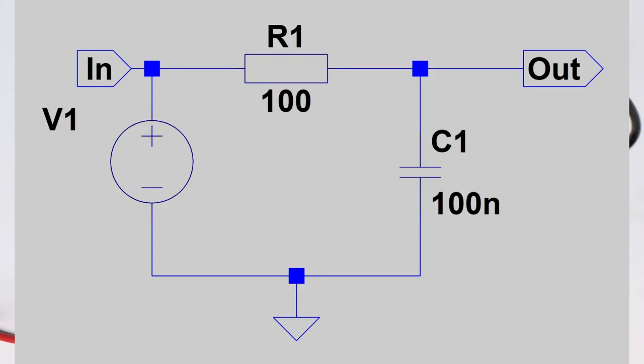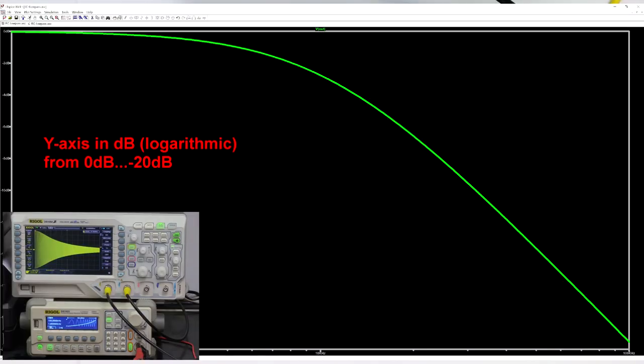You will always for every filter see in the background the circuit diagram and a simulation of the frequency response in LTSpice. Down on the left you can see the real signal with a logarithmic frequency sweep coming from a function generator, and then the output displayed on a digital oscilloscope.